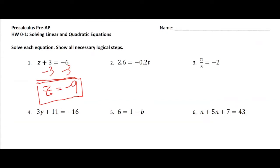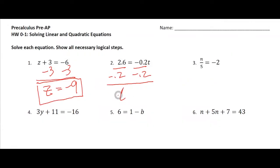Number 2 — you can see that the t is being multiplied by negative 0.2, so we're going to divide both sides by negative 0.2. 2.6 divided by negative 0.2 — negative 13. Okay, so I'm going to assume that's right. Negative 13.